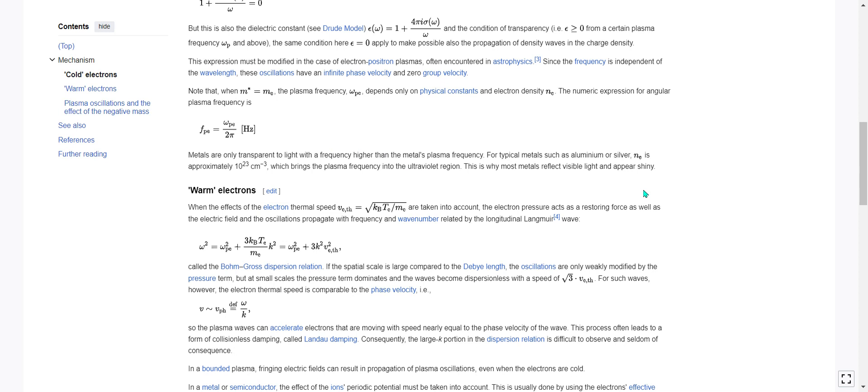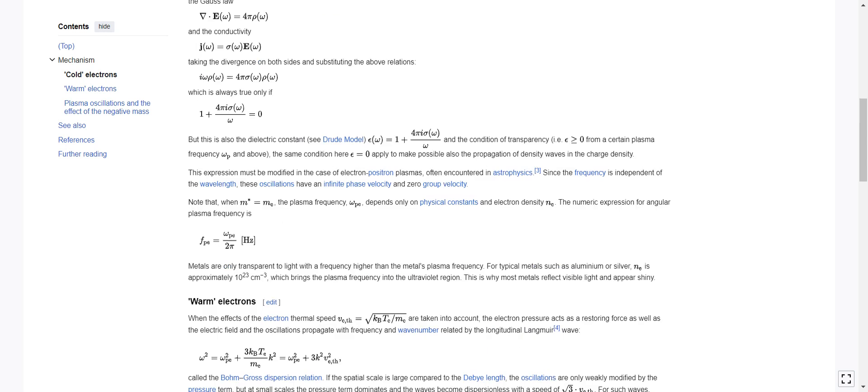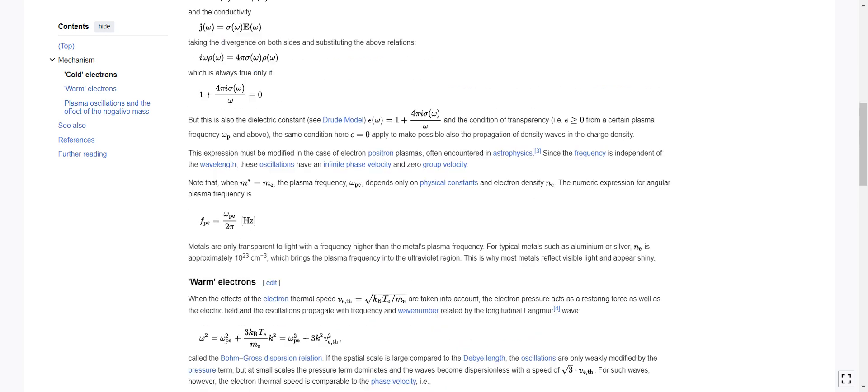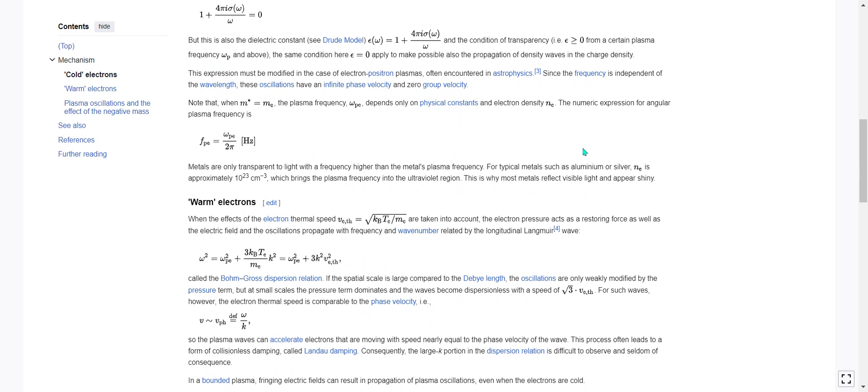Metals are only transparent to light with a frequency higher than the metal's plasma frequency. For typical metals such as aluminum or silver, n sub e, the number density of electrons, is approximately 10 to the 23 per cubic centimeter, which brings the plasma frequency into the ultraviolet region. This is why most metals reflect visible light and appear shiny.